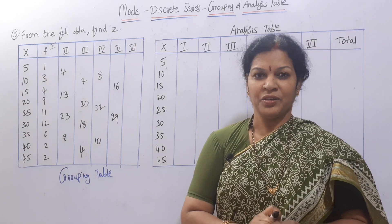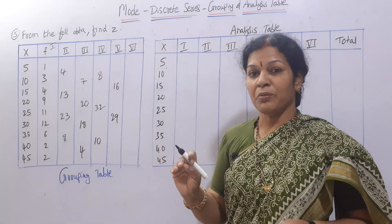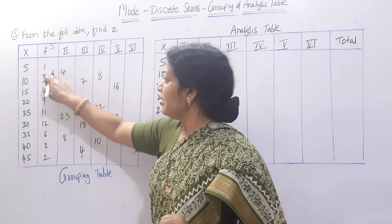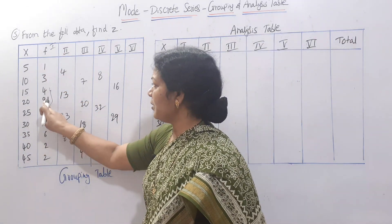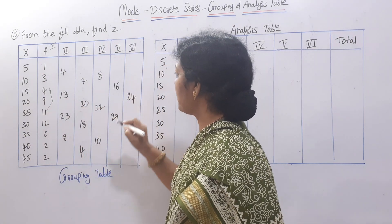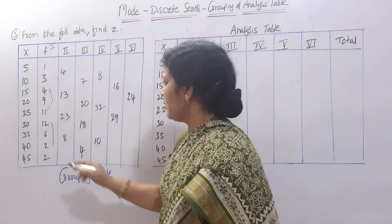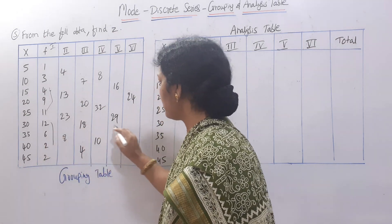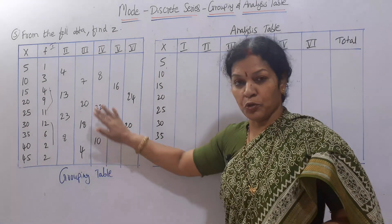For column 6, we leave the first two frequencies and add three-by-three: 4 plus 9 plus 11 gives 24, written opposite 9. Next group: 9 plus 11 plus 12 gives 32 — wait, the next three are 11 plus 12 plus 6, giving 20 — written opposite 12. The grouping table is now complete.